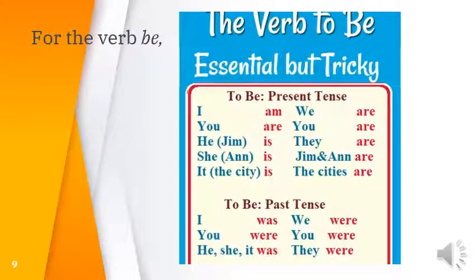As a refresher: I → am; you → are; he, she, it, or names → is; we, you, they → are. Compound nouns and plural nouns also use 'are'. Note that this reference also shows past tense forms, but our lesson is focused on the present.